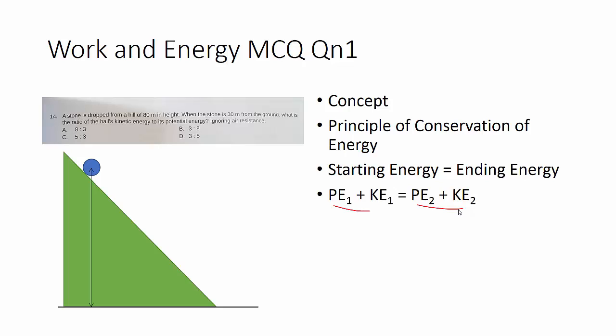It starts at a height of 80. You'll find that the potential energy is just simply mgh, which is 80 times mg. In this case, they didn't give you a mass, but it is alright, because later we are going to cancel them out.